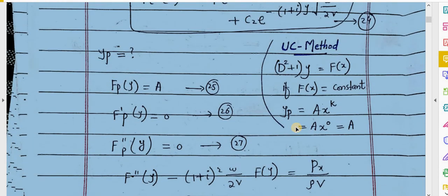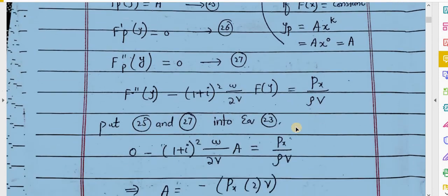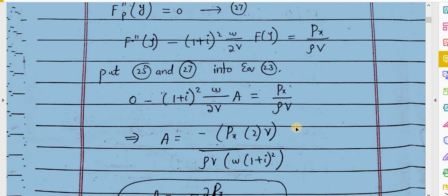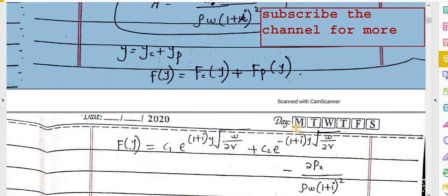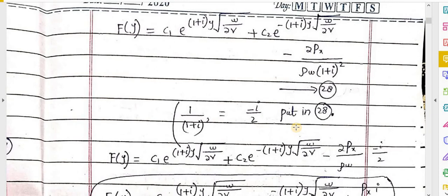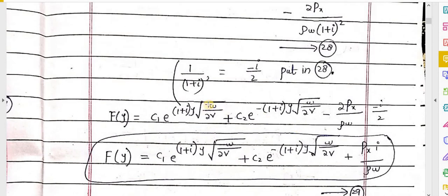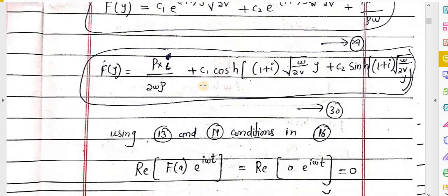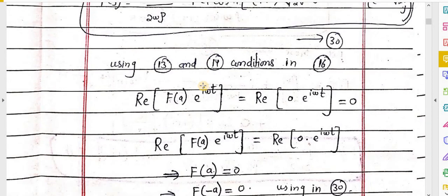After putting the values of equations 25 and 27 into equation 23, we obtain a new expression. From this, 1 over (1 + a·scale) equals the result, and f(y), the final solution, can be written as equation 29 or equation 30. We now use boundary conditions 13 and 14 in equation 16.